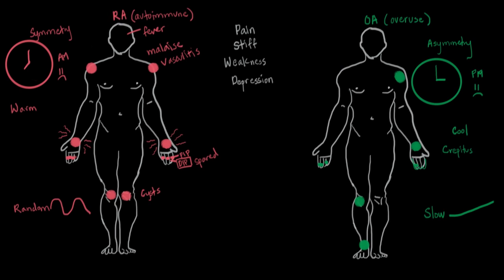So these are the main symptoms that differ between RA and OA. As you can see, they all make sense when you think back to the cause of each disease. History alone — asking these questions alone — should give you a good idea of which one it is. There are more specific ways to diagnose each, but just from these symptoms, you should be able to tell rheumatoid arthritis apart from osteoarthritis.